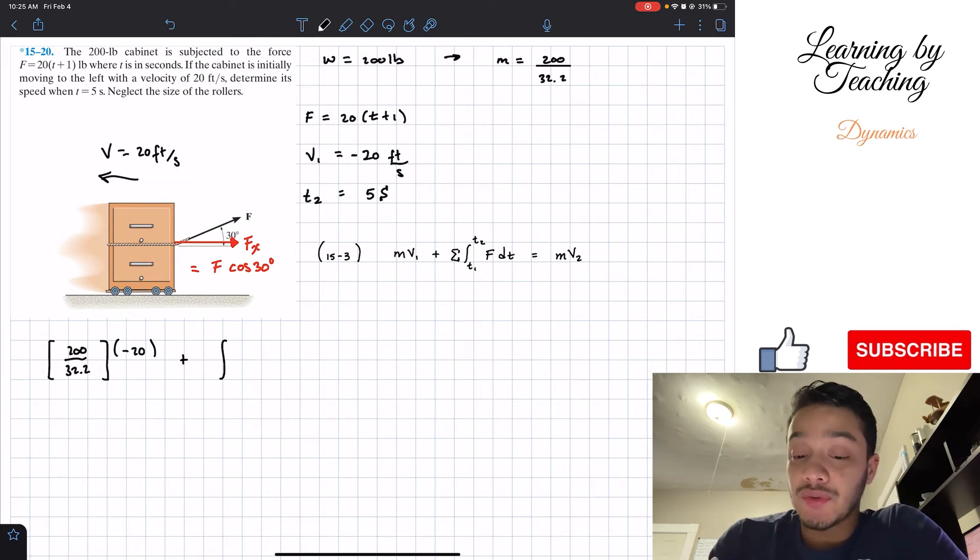Now, if we're going to do the integral of this force, well, we're going to have the time from time zero when we start all the way to five seconds of the force F of X. So this is F times cosine of 30.